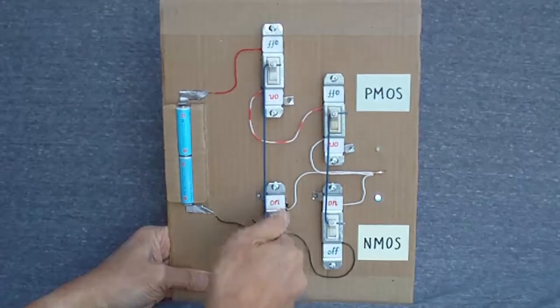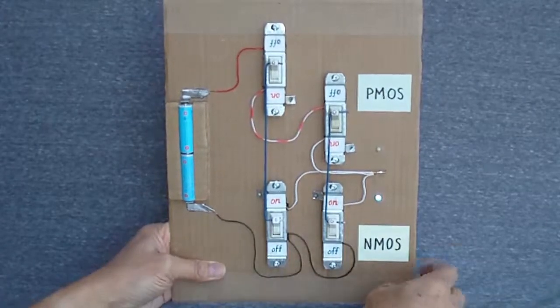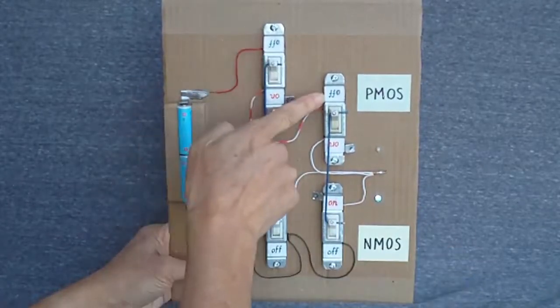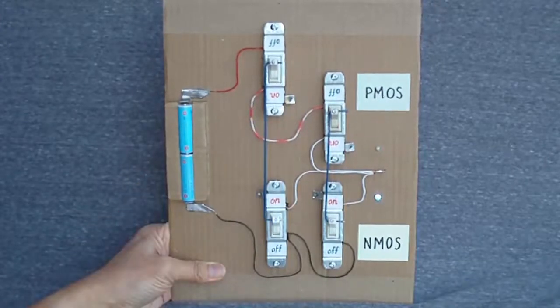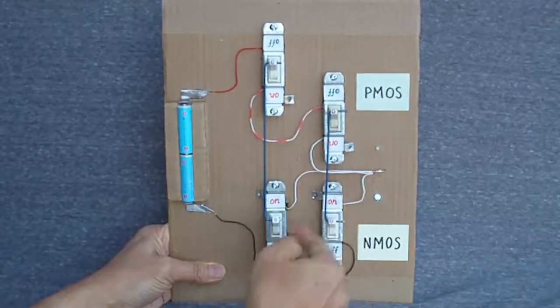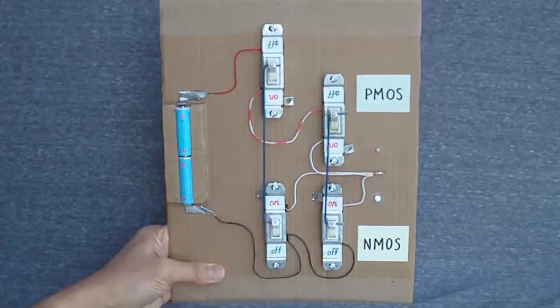Finally, if both inputs are high, the output is cut off doubly from the power supply, and connected to ground through two NMOS transistors, so the voltage is still low.